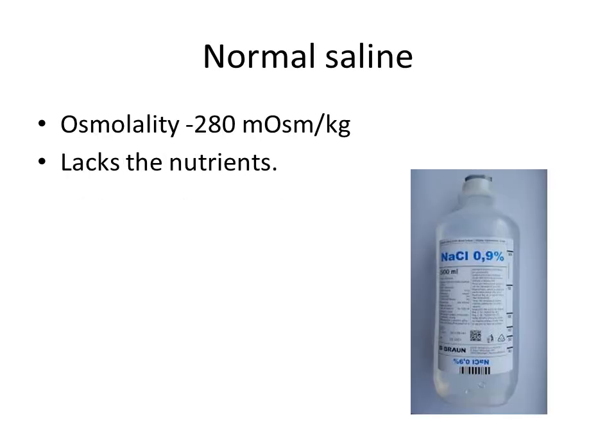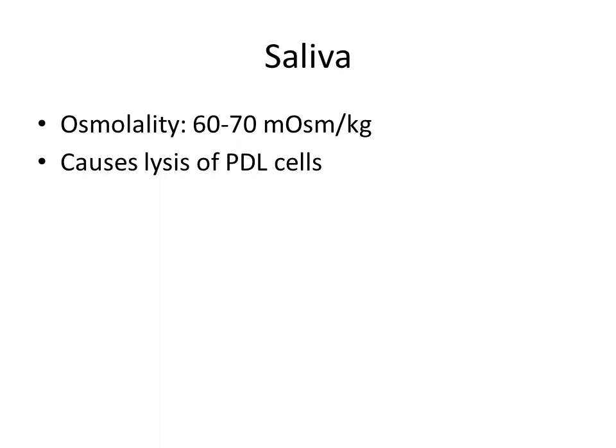Various storage media have been researched. First, normal saline — it has an osmolality of 280 milliosmol/kg and can be used as a transport medium, but only for a limited period of time. It lacks nutrients like sodium, calcium, and metabolites necessary for normal metabolism of periodontal ligament cells, so it can only serve as a storage medium for a limited duration.